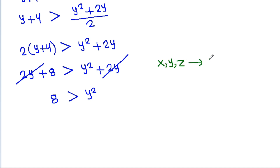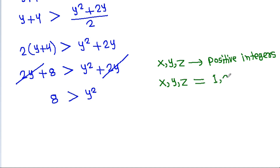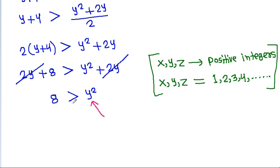Since x, y, and g are positive integers and y squared must be less than 8, y can equal 1 or 2. y cannot be 3 or more because 3 squared is 9, which is greater than 8.